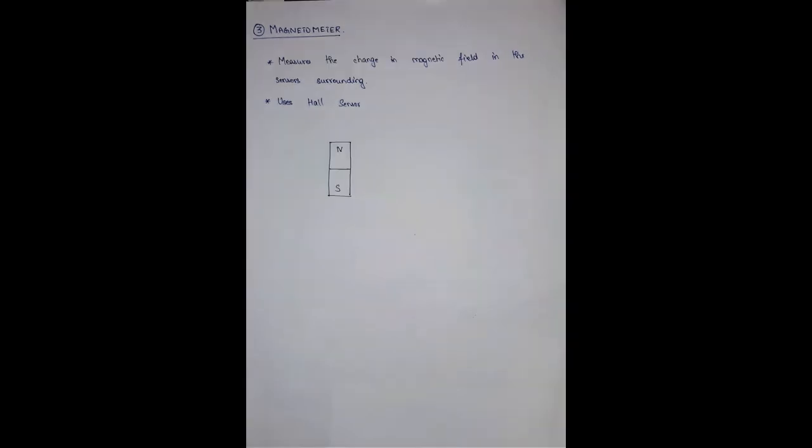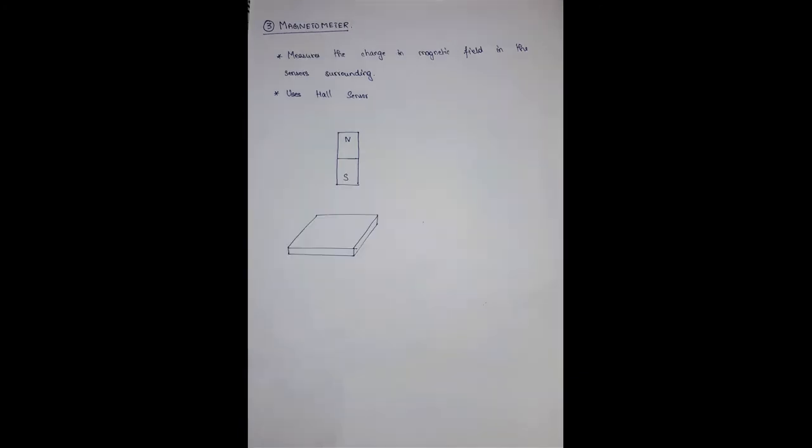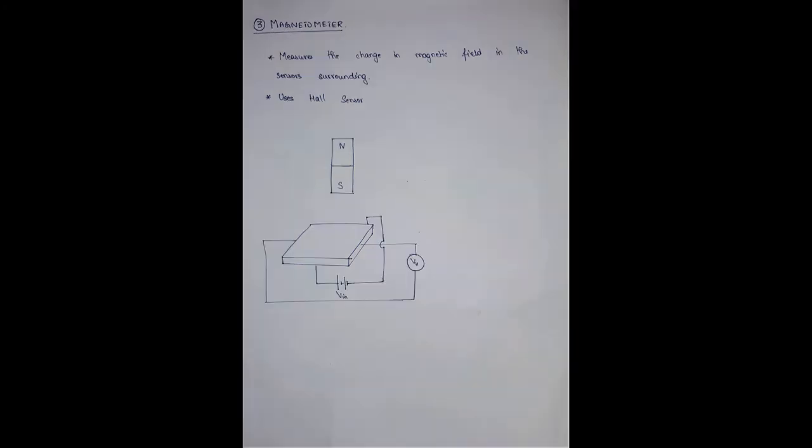Next, we'll be moving on to the magnetometer. Magnetometer is a device that measures the changed magnetic field in the surrounding of the sensor. Usually, magnetometers use Hall sensor. Hall sensor is nothing but which is explained right now. Consider a magnet, a plane magnet. And the Hall sensor is placed over here. The sensor terminals are connected to output as well as an input. The output is VH which means Hall voltage and the input is VIN.